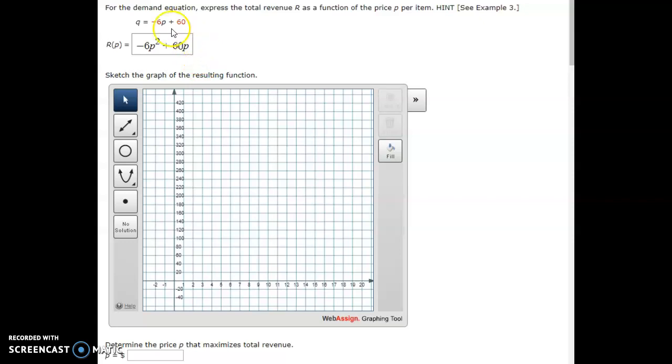150, because I did negative B over 2A. That gave me 5. Plugged the 5 in, and that got me 150. So there's my vertex. And then my second data point that I'm going to have automatically is, you plug in 0 for the price, revenue is going to be 0. So those are my two data points.